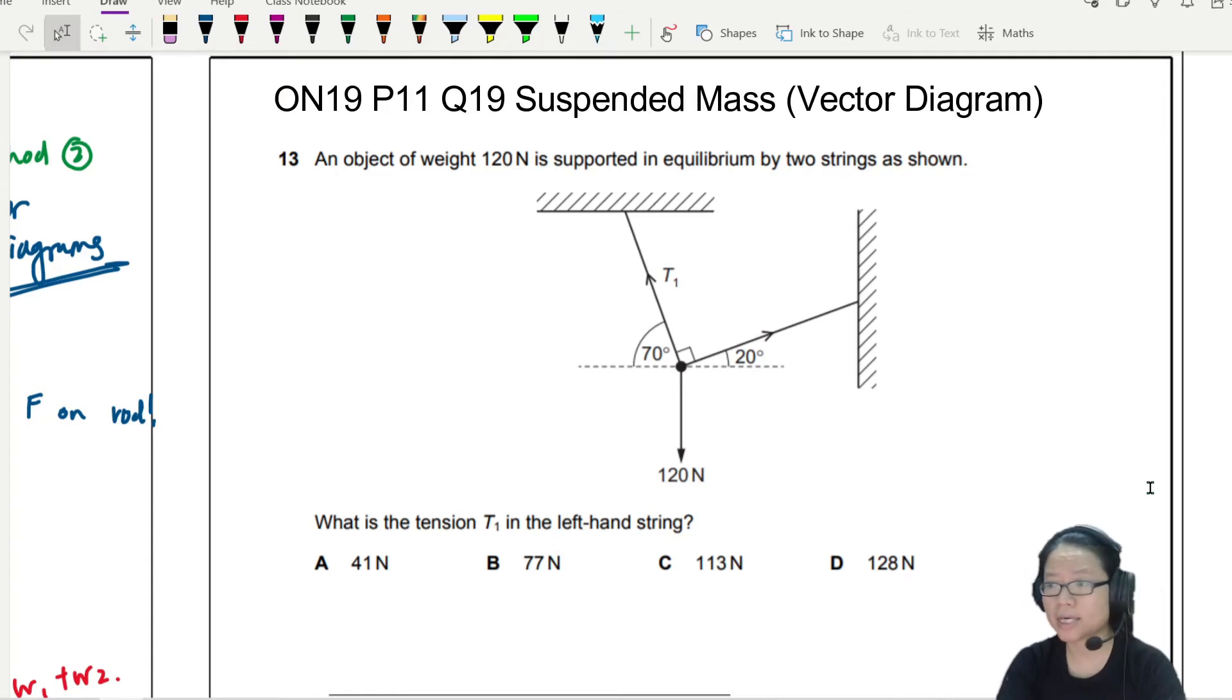So in this case, you have a hanging object that is in equilibrium and supported by two strings as shown. And you're asked to find the tension T1 of the left-hand string. So to find this tension, of course, you can resolve forces,